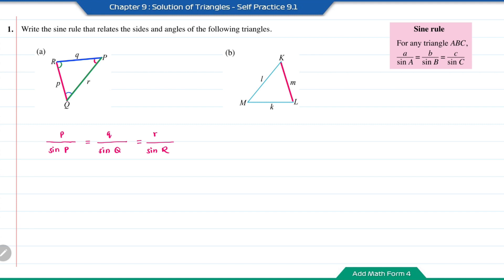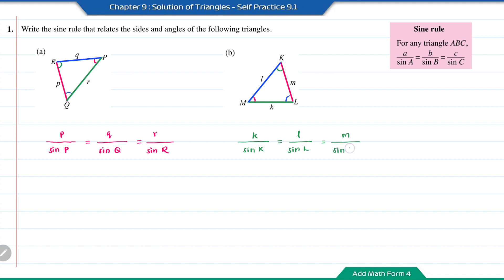For question B, the length M is opposite sine angle M, the length L is opposite sine angle L, and the length K is opposite sine angle K. So the sine rule for question B is: K over sine angle K equals L over sine angle L equals M over sine angle M.